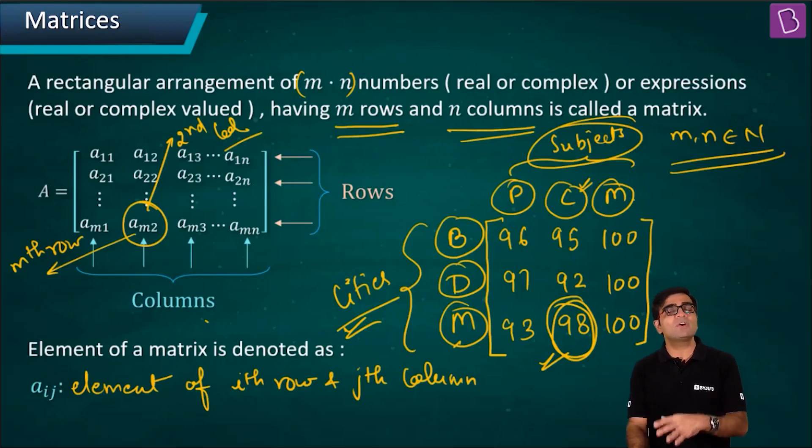aij stands for ith row, jth column element. This is a standard notation. Please get comfortable with it. If I have a23, I'm talking about second row and third column element. If I have a54, I'm talking about fifth row, fourth column element.